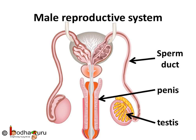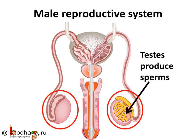The male reproductive organs include a pair of testes, two sperm ducts, and a penis. The testes produce the male gametes called sperms. Millions of sperms are produced by the testes.